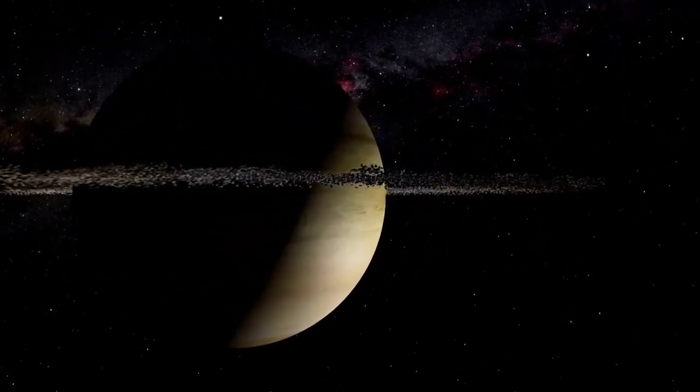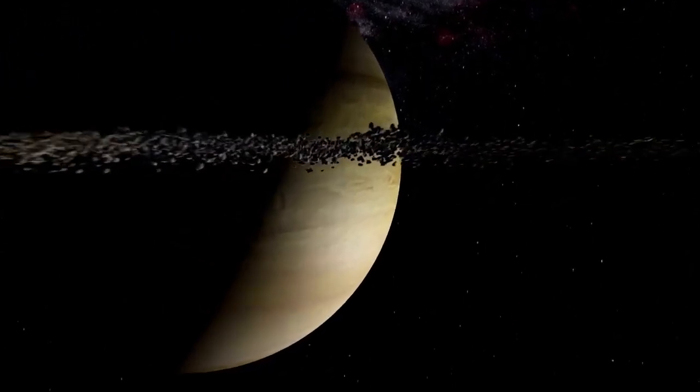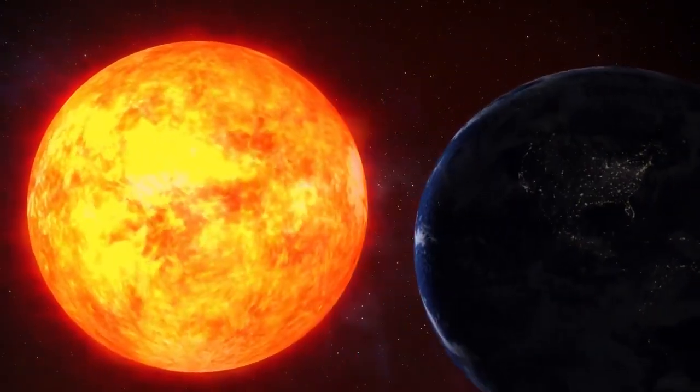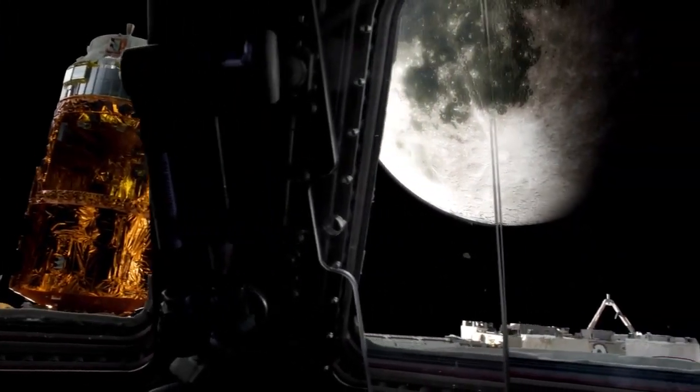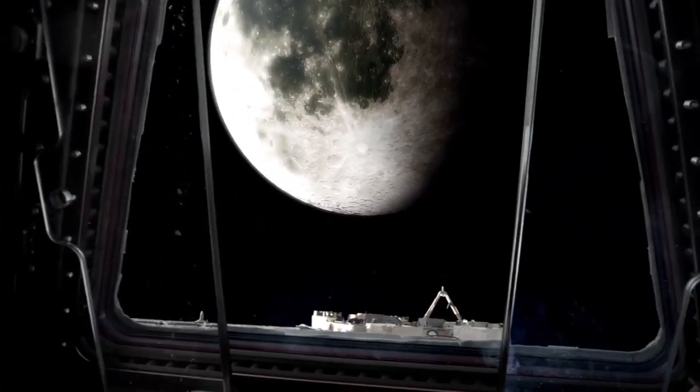But today, Voyager 1 has just sent back information that defies everything we thought we knew. At the edge of our solar system, in an area known as the Heliopause, Voyager 1 has recorded something scientists are calling an impossible discovery.